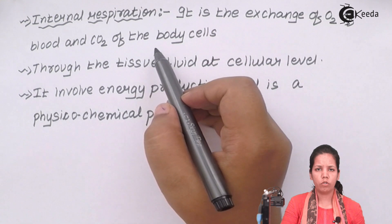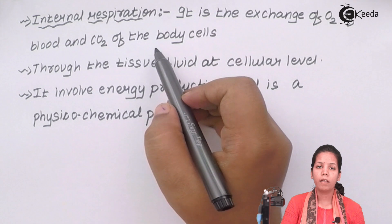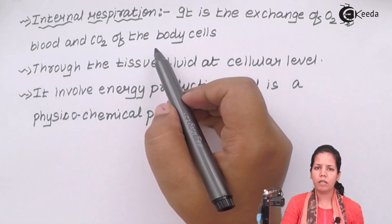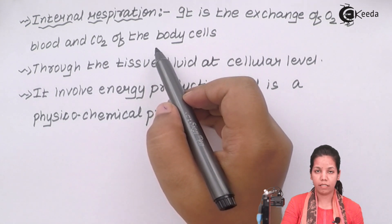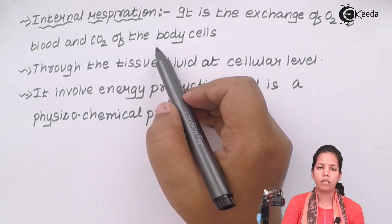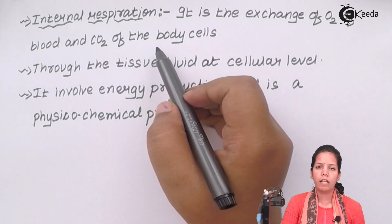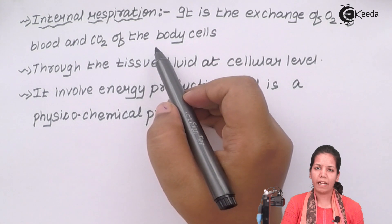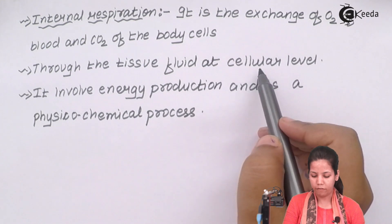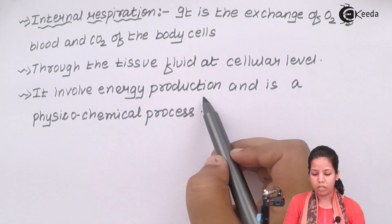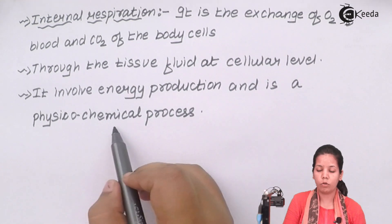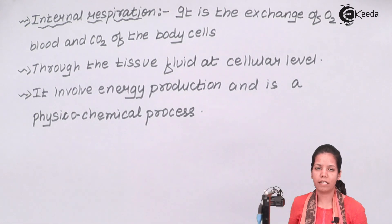The process involves removal of CO2 with the help of RBCs and the enzyme carboxylase. Whenever CO2 is removed, it is removed in the form of bicarbonates, or HCO3. These bicarbonates are then broken down into CO2 molecules and H+ ions in the presence of the enzyme carbonic anhydrase. Carbonic anhydrase helps remove CO2, while oxygen is carried with the help of hemoglobin and RBCs through tissue fluid at the cellular level. This process involves energy production, as it is a physicochemical process that takes place with the help of enzymes.